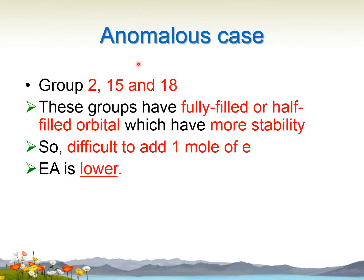There are some anomalous cases which happen in group 2, 15, and 18, which involve fully filled and half-filled orbitals — same as the previous lesson on ionization energy. Fully filled or half-filled orbitals have more stability, meaning it is difficult to add or remove one mole of electrons. So for EA, EA is going to be lower.